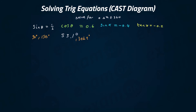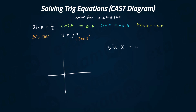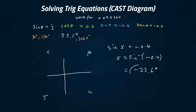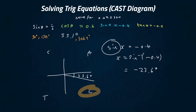Next: sine x equals minus 0.4. Here we think about what the negative part of the diagram means. We work out the principal value: x equals shift sine of minus 0.4, and we get minus 23.6 degrees. We draw the CAST diagram and mark minus 23.6 degrees — going clockwise because it's negative.